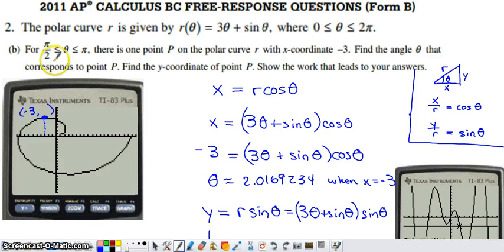In Part B, they tell us that between π/2 and π, there's a point on the curve with x-coordinate -3. We want to find the angle θ where this occurs and the y-coordinate of that point. Looking at the graph, there is indeed a point where x = -3.